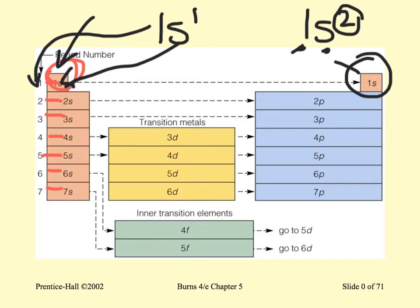Now you see why hydrogen is placed here — because it belongs to the S groups, although it is not a metal. We were saying that the period is the number of the level of energy. And now it is easier to understand why inner transition metals are located outside of the periodic table, because they are a different block — they belong to the F orbital.